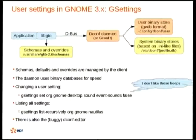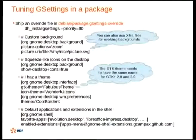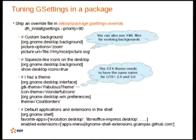You can change settings using the gsettings command, which I recommend for users. There is a dconf-editor command — don't complain if it crashes, it will sometimes — but it can be useful to look through the tree for a given piece of data. Just like with GConf, you can tune GSettings in a package: ship a GSettings override file in the Debian directory and debhelper will do the rest. You can have stacks of settings with different priorities.